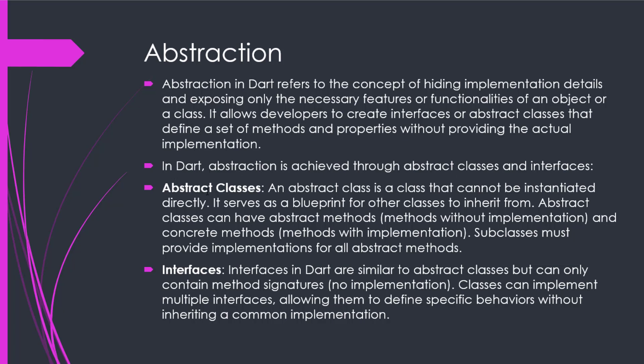First of all, we will see abstract classes. An abstract class is a class that cannot be instantiated directly. It serves as a blueprint for other classes to inherit from. Abstract classes can have abstract methods — methods without implementation — and concrete methods — methods with implementation. Subclasses must provide implementations for all abstract methods.